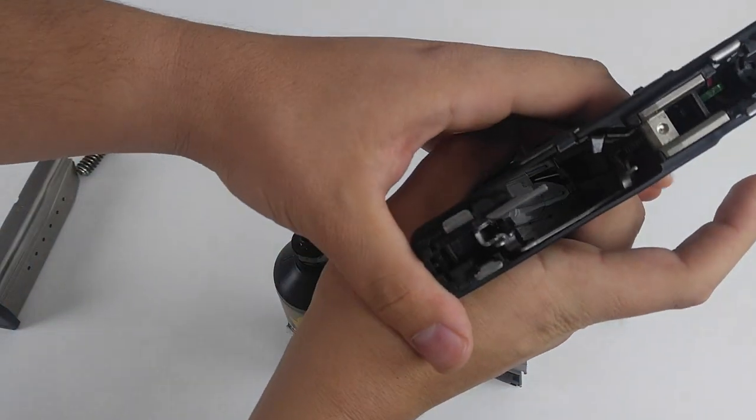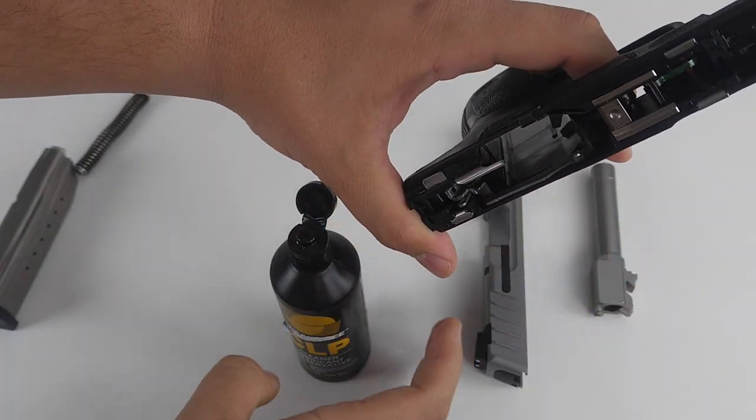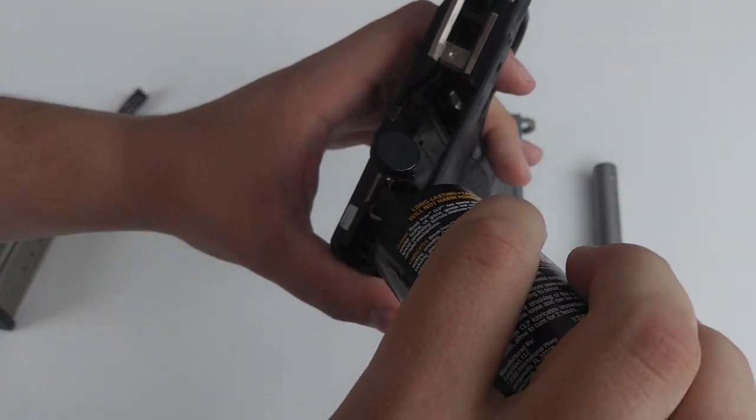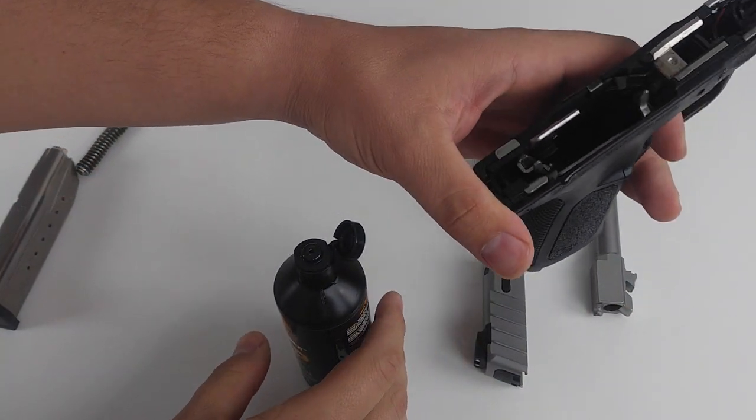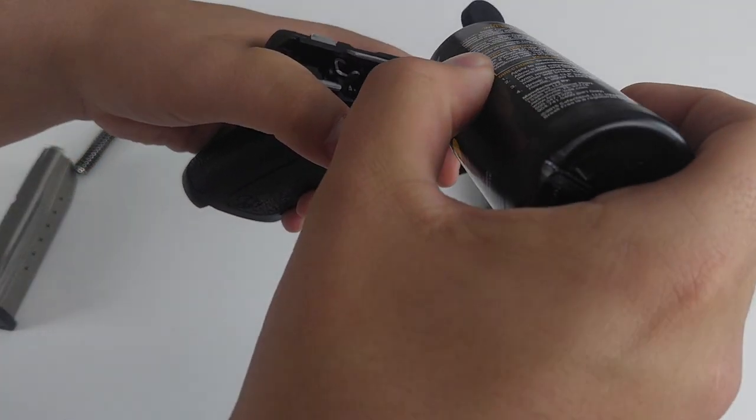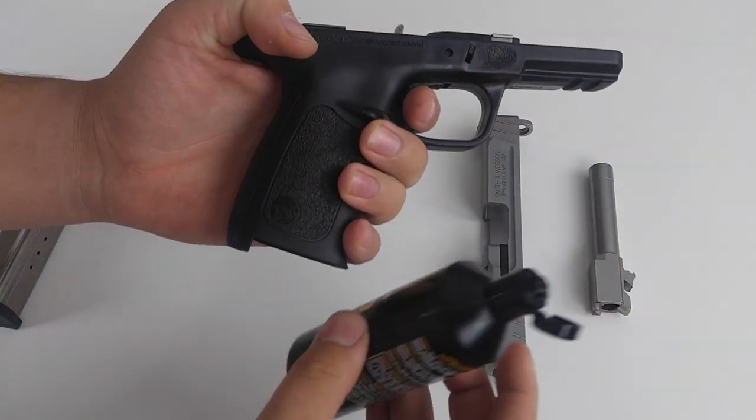And now the trigger, the moving part in there and the spring. Just going to want to put a little bit on any moving part that you see and then also a drop on the spring inside as well. Just drop that in there. Perfect.